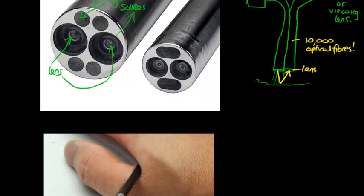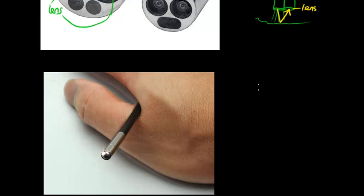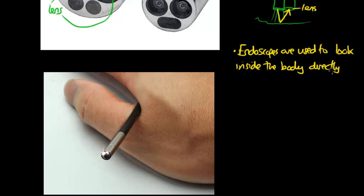Okay, so let's write a few words about how this works. First of all, endoscopes are used to look inside the body directly through natural openings or keyhole incisions.